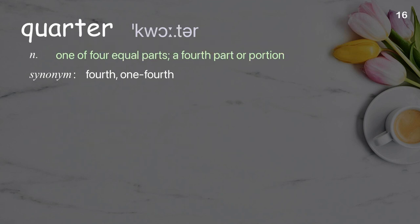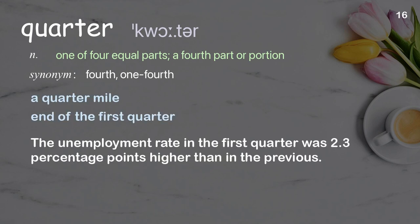Quarter: one of four equal parts; a fourth part or portion. Examples: a quarter mile, end of the first quarter. The unemployment rate in the first quarter was 2.3 percentage points higher than in the previous.